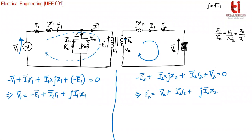Now, here I1 can be expressed in terms of I0 and I1 dash. That is the relationship we get from KCL. So the equation is: I1 bar is equal to I0 bar plus I1 dash bar.